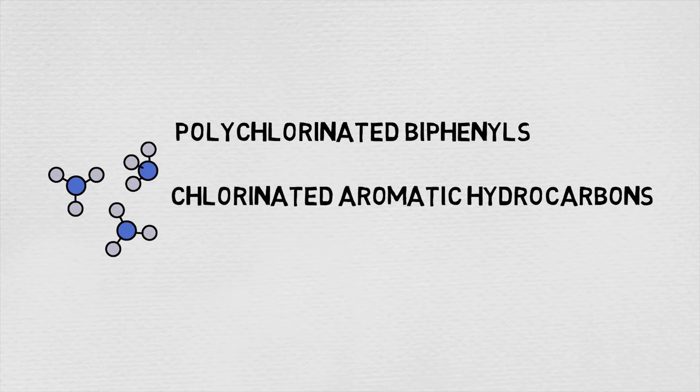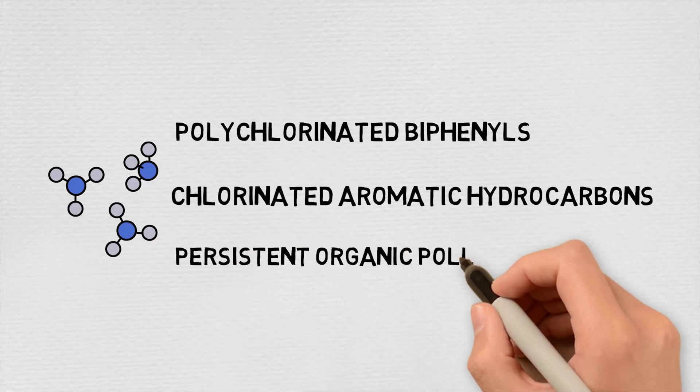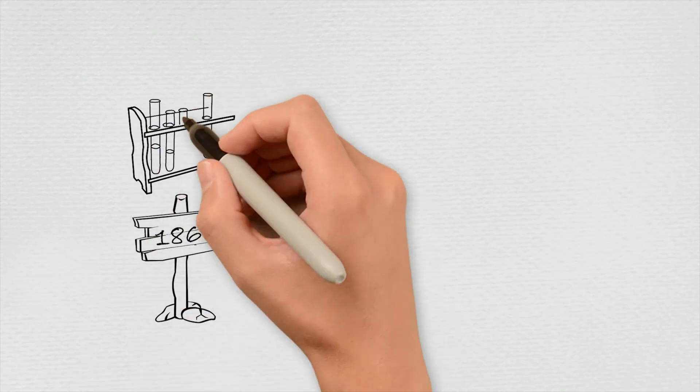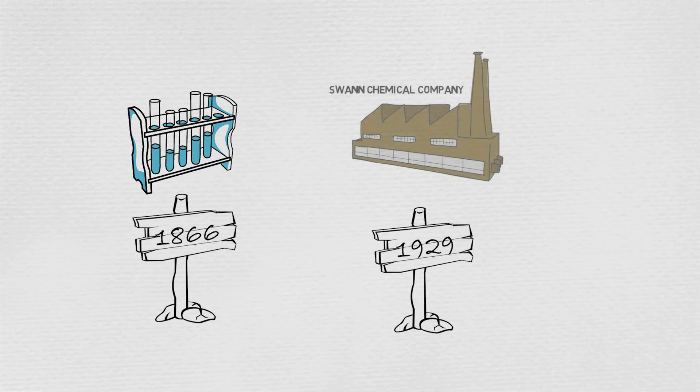In addition, PCB is one of the original 12 POPs, which stands for persistent organic pollutants. PCBs were first synthesized in 1866. In 1929, the American Swan Chemical Company started the industrial production of PCBs.